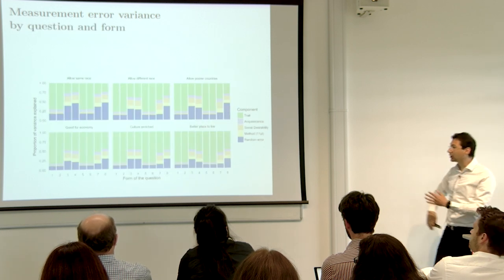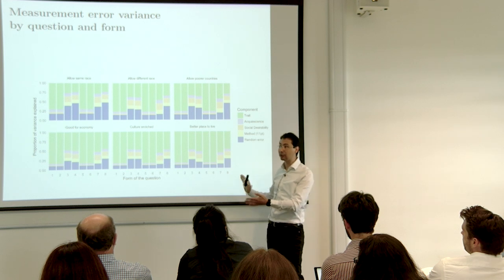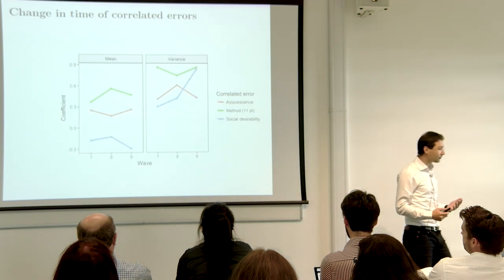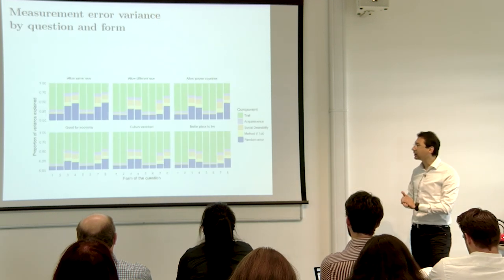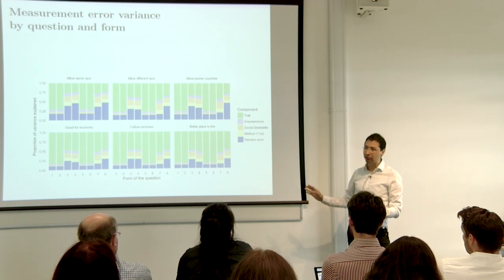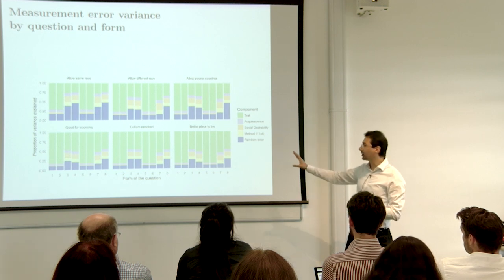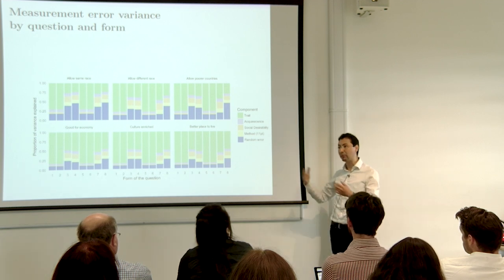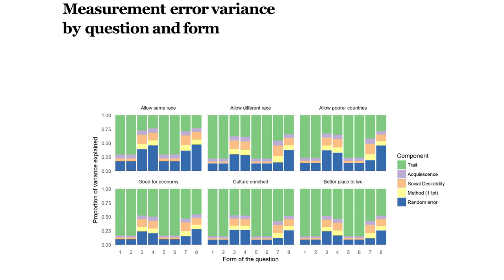We can also combine wording and question to see if some wordings are better for some questions than others. Then, for the longitudinal aspect: I won't show the graph, but I ran the same model across three waves of the Innovation Panel — since it's a panel study with multiple waves of the same people, we can examine how systematic error changes over time.